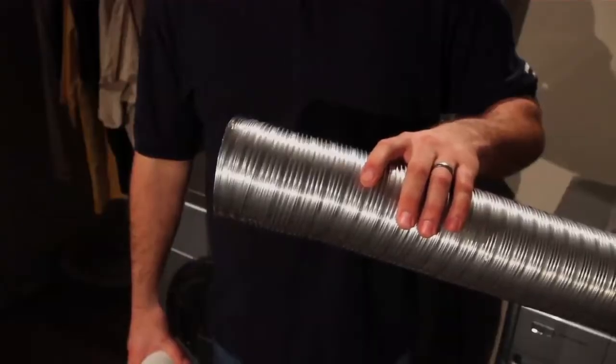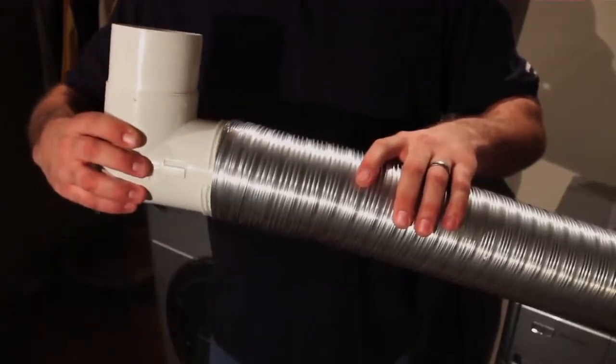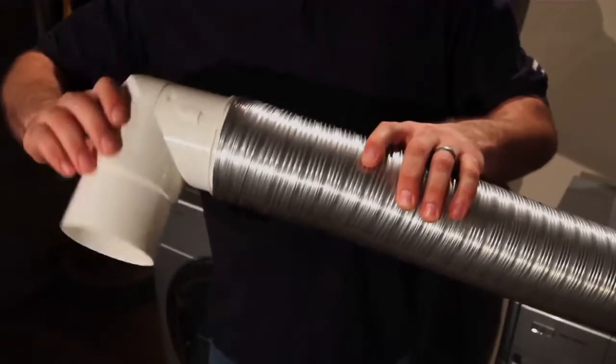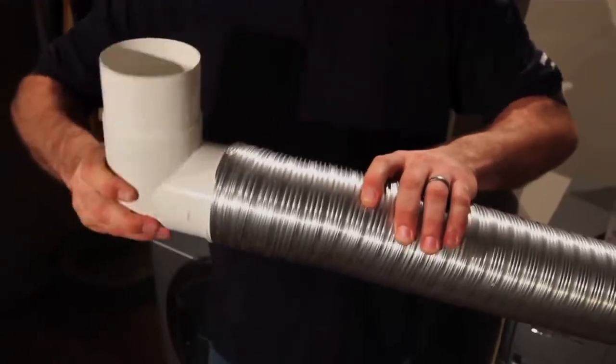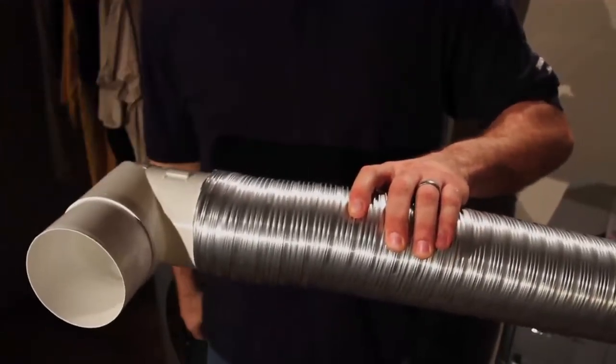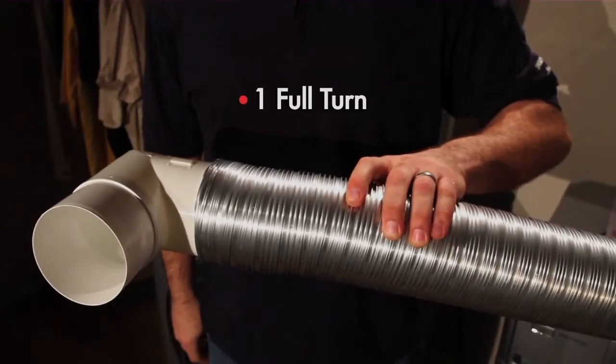If your kit comes with a semi-rigid aluminum duct, simply thread the threaded portion of the elbow into the duct turning it clockwise. One full turn of the elbow into the duct is adequate to securely fasten the two components together.